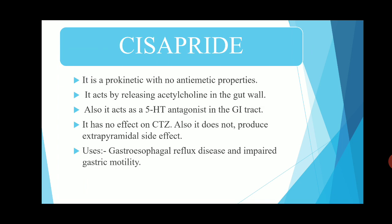The next drug is cisapride. It is also a prokinetic agent but with no anti-emetic properties. It acts by releasing acetylcholine in the gut wall, and also acts as a 5-HT antagonist in the GI tract. It has no effect on CTZ and does not produce extrapyramidal side effects. It is used in gastroesophageal reflux disease and impaired gastric motility.